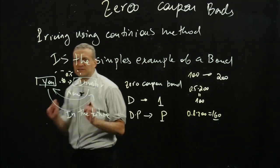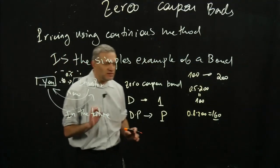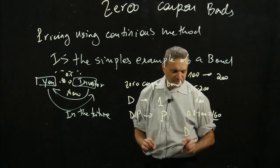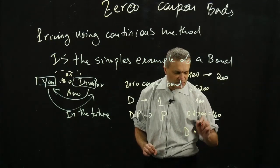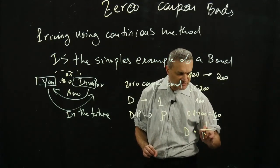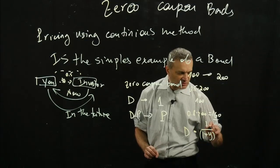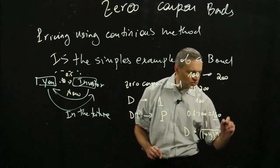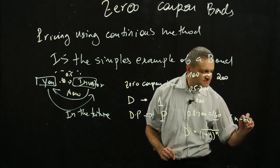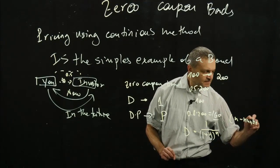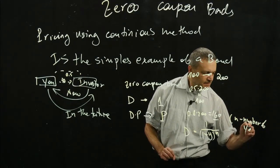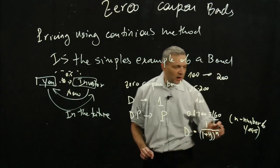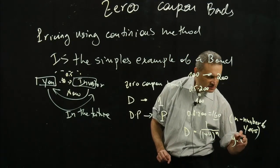Now let's talk about the yield. By definition, D — which is your discount factor — equals 1 divided by (1 plus Y) to the power of N, where N is your maturity, N is your number of years, and Y is your yield.